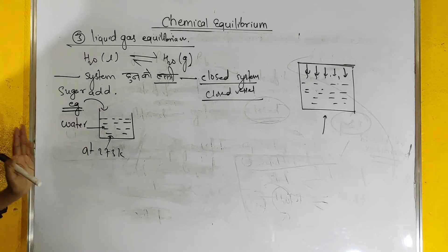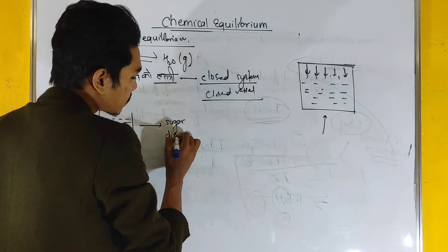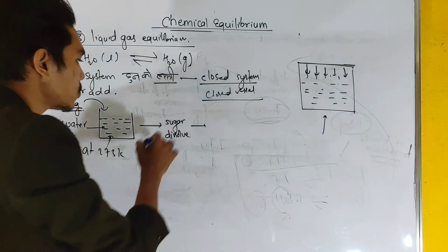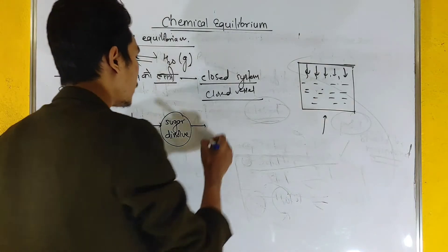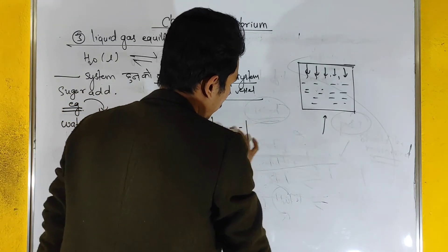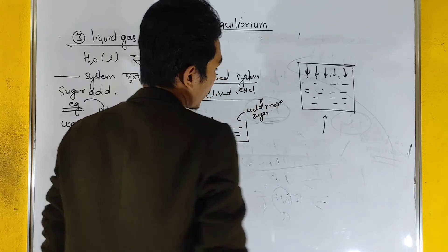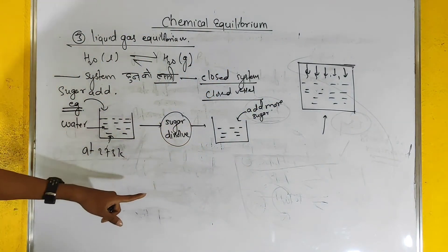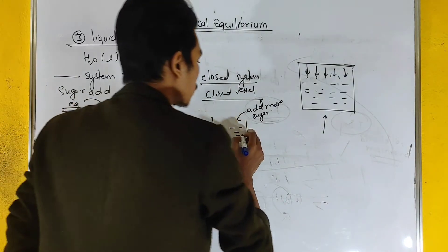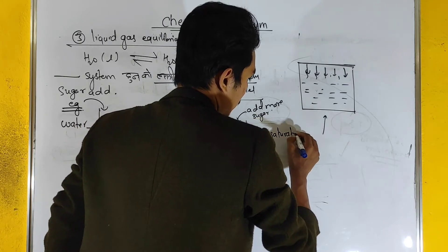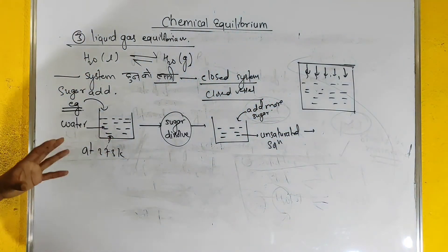At 273 Kelvin, after some time, sugar dissolves in the water. We add more sugar. As we add more sugar, an unsaturated solution is formed.